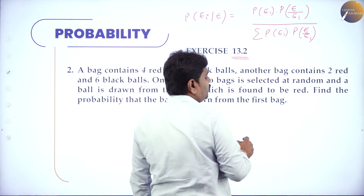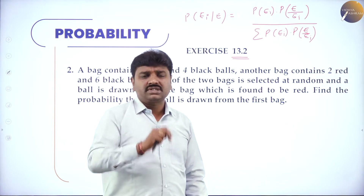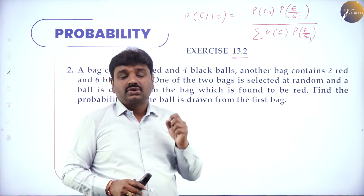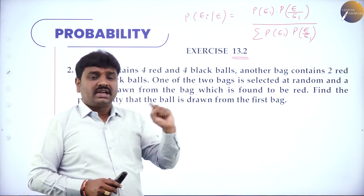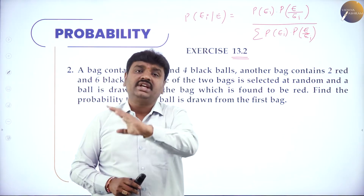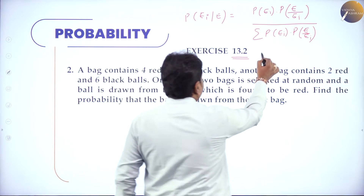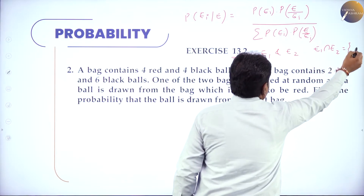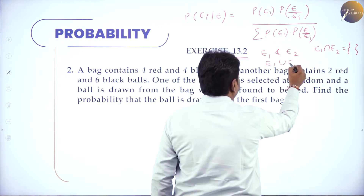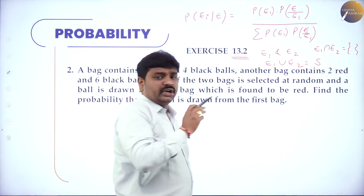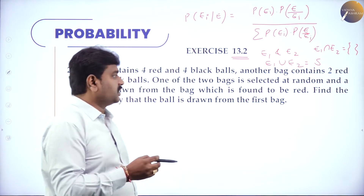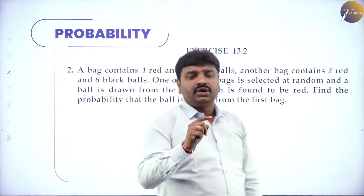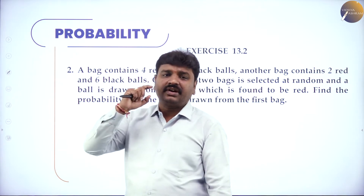Simply speaking, suppose I have two events which are mutually exclusive — E1 and E2. E1 and E2 do not have any common elements, and they are exhaustive. Exhaustive means if you do E1 union E2, you should get the sample space. E1 and E2 are mutually exclusive if E1 ∩ E2 is the null set, and exhaustive if E1 ∪ E2 gives you the sample space. In each problem, our task is to read the problem and define E1, E2, and E (the common event).